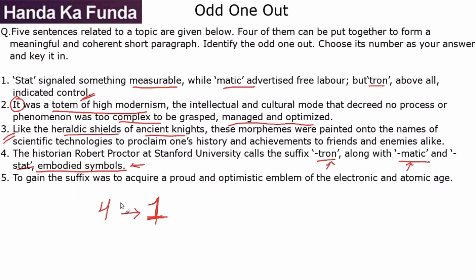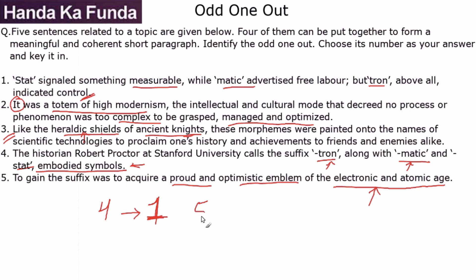Sentence five reads: 'To gain the suffix was to acquire a proud and optimistic emblem of the electronic and the atomic age.' This links with the heraldic shields — a proud and optimistic emblem. Sentence three says 'like the heraldic shields of the ancient knight,' giving an older example. So sentences five and three are also connected — five discusses the impact in the electronic and atomic age, and three gives an older example of that impact.